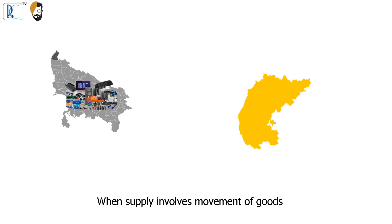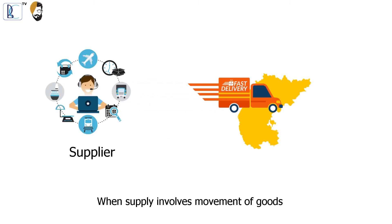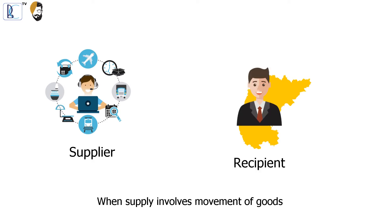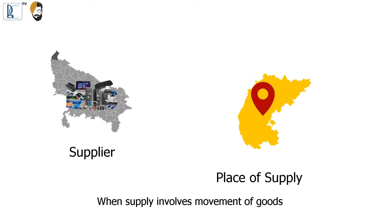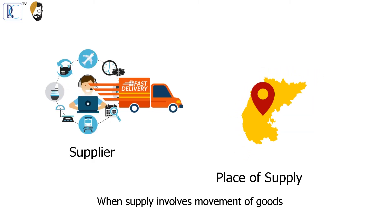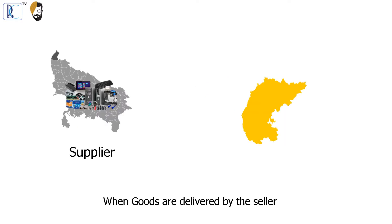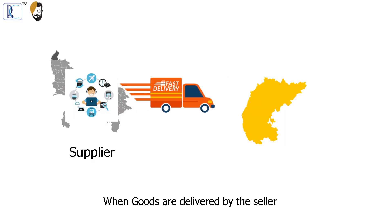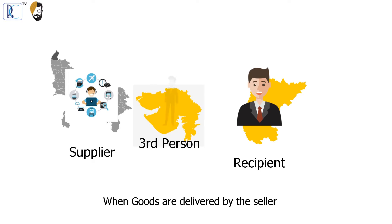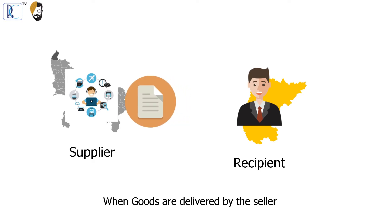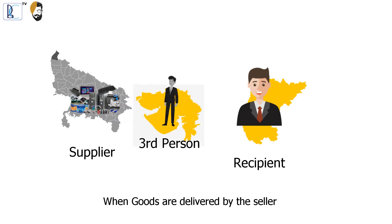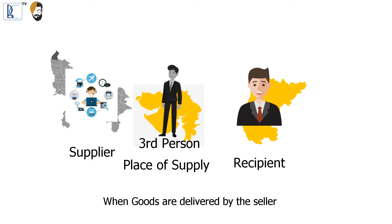When supply involves movement of goods — whether by the supplier, the recipient of goods, or by any other person — the place of supply will be the location of the goods when the movement terminates for delivery to the recipient. When goods are delivered by the seller to a recipient on the direction of a third person, before or during movement of goods by way of transfer of documents of title or some other way, it is assumed that the third person has received the goods, and the place of supply will be the principal place of business of that third person.